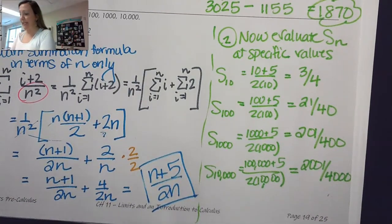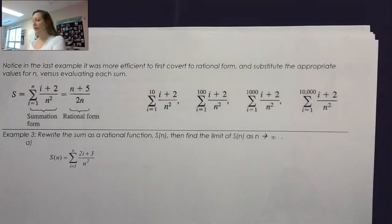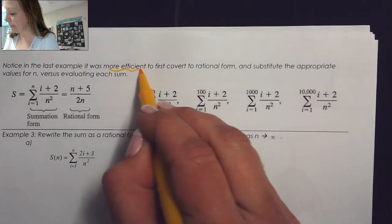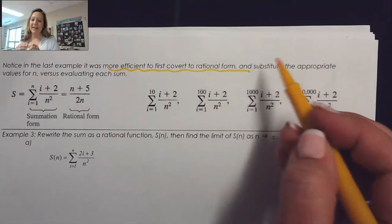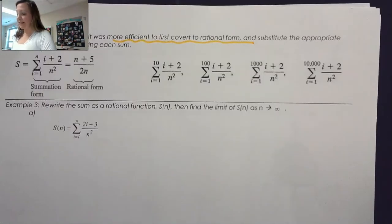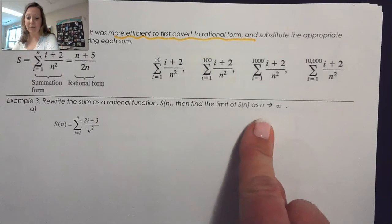As noted, it was more convenient to convert the sum into rational form and then substitute the appropriate values for n, rather than evaluating each sum individually. This approach — converting to rational form — will be key for the next problems, which ask us to rewrite the sum as a rational function S(n) and then find the limit of S(n) as n approaches infinity.